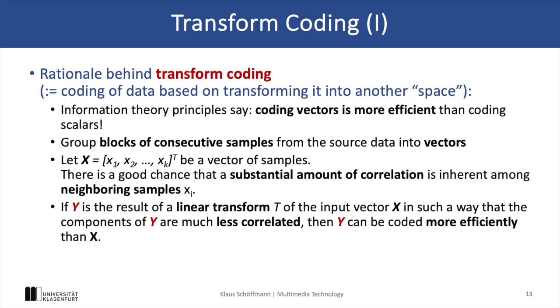The idea of transform coding is to encode data by transforming it from one domain to another, for example from pixel domain to the frequency domain. This principle is based on information theory which postulates that coding vectors is more efficient than encoding scalars.